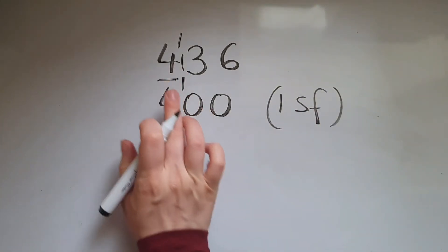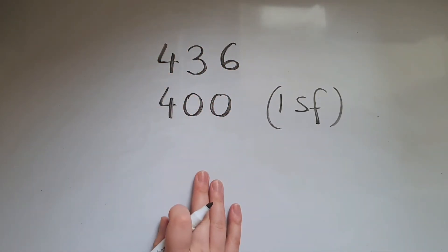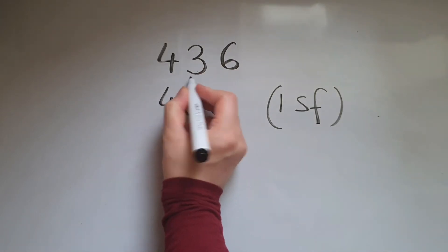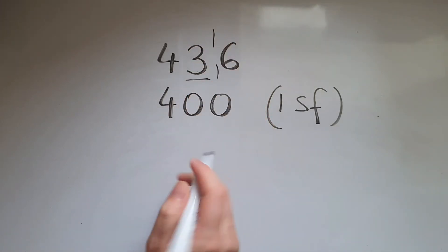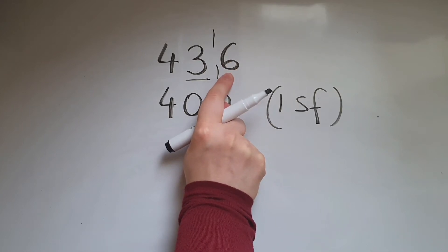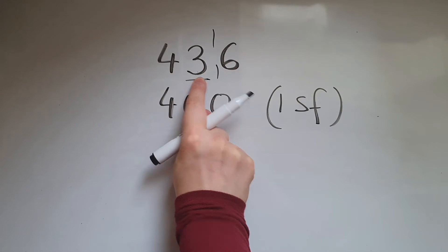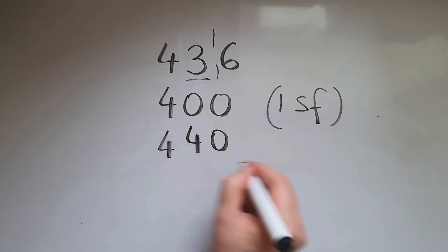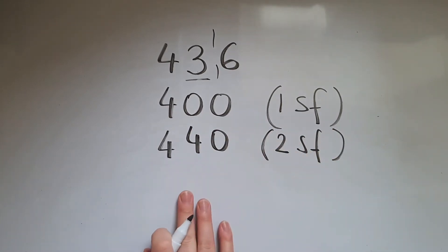If I am to round the same number to two significant figures, that means not the 4 — looking at the 3. So rounding it to the nearest 10. To decide, I'm going to look at the digit on its right and that is 6. So that means I'm going to round this up and that will be 440. So that is rounded to two significant figures.